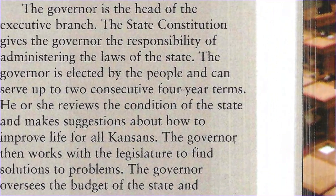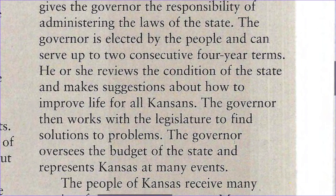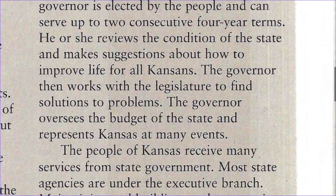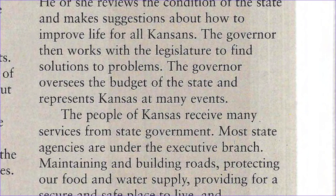Executive branch. The governor is the head of the executive branch. The state constitution gives the governor the responsibility of administering the laws of the state. The governor is elected by the people and can serve up to two consecutive four-year terms. He or she reviews the condition of the state and makes suggestions about how to improve life for all Kansans. The governor then works with the legislature to find solutions to solve problems. The governor oversees the budget of the state and represents Kansas at many events.